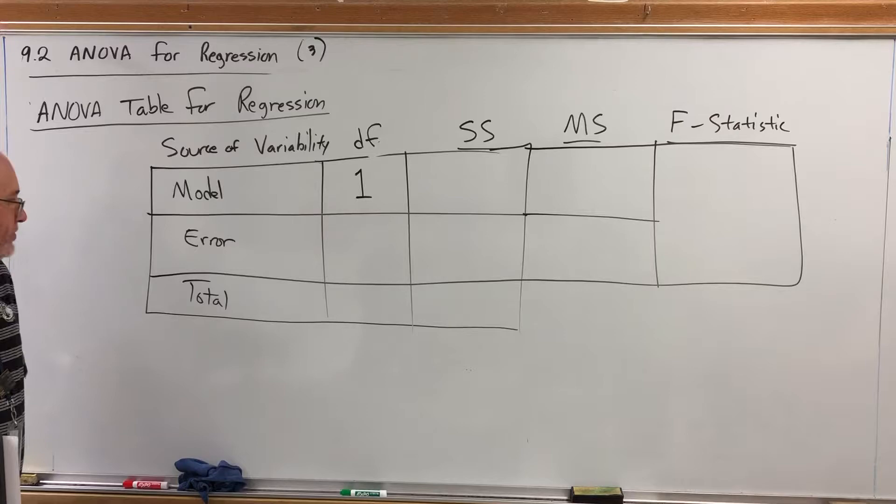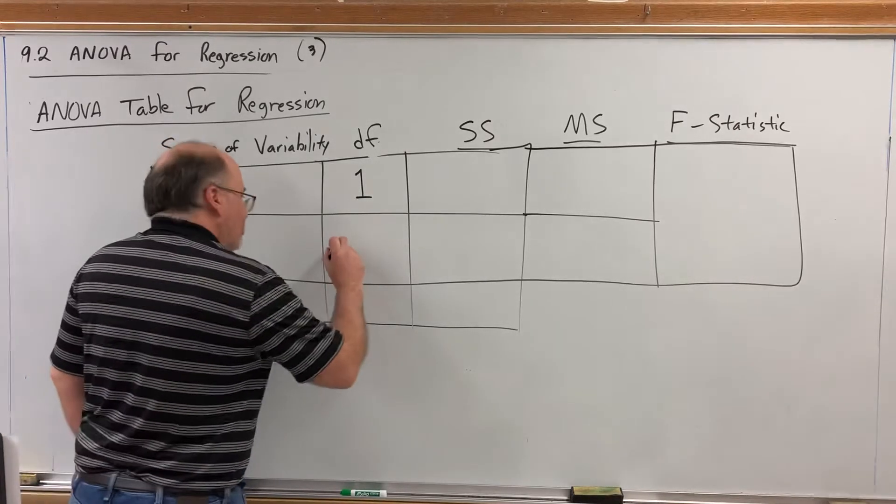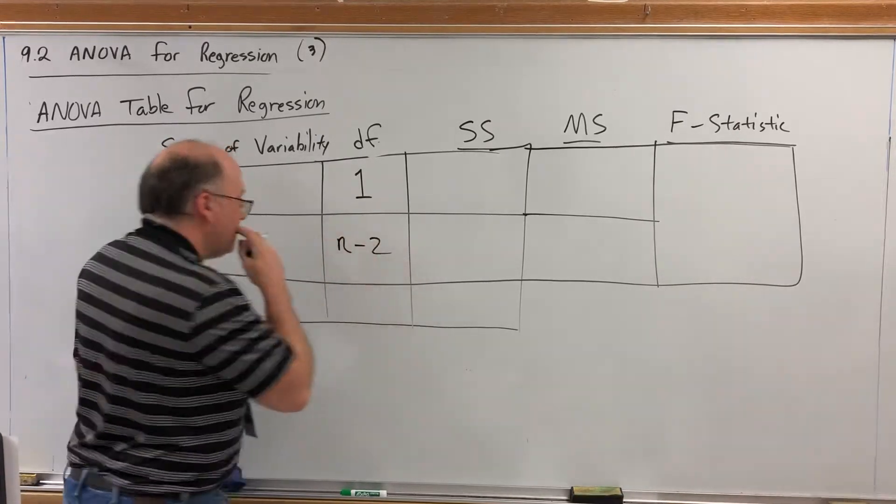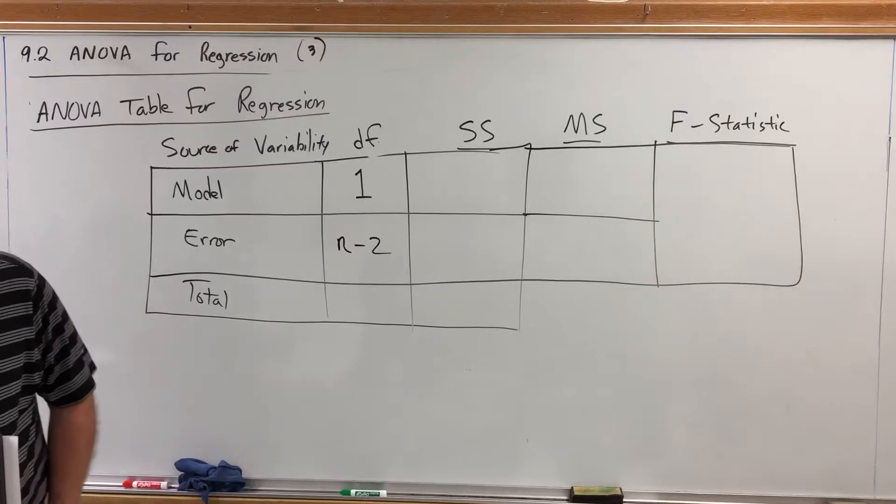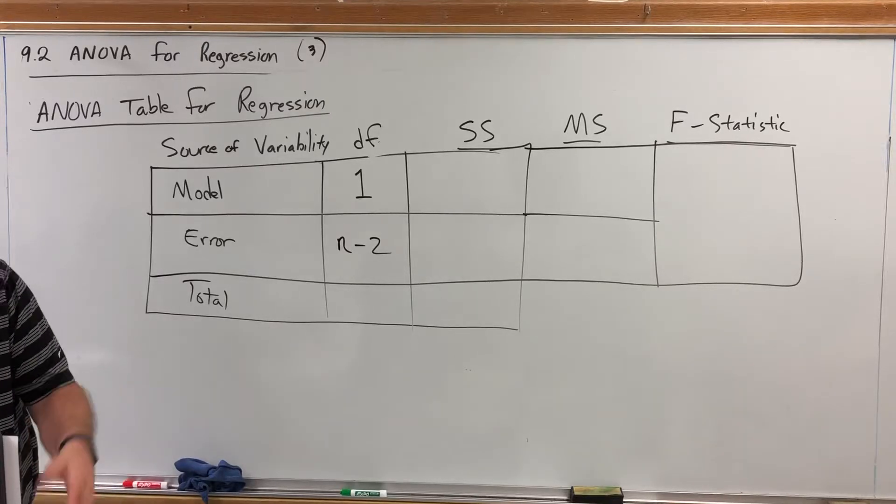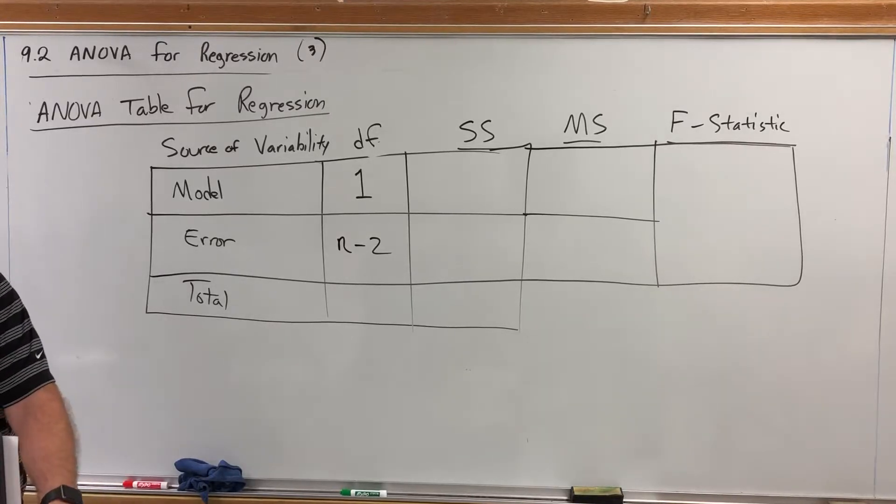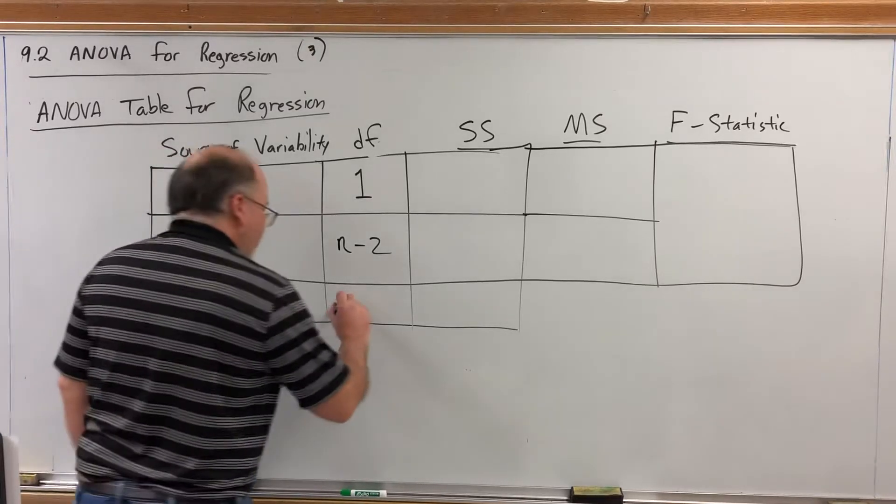The formula for the degrees of freedom in the error is n minus two. Where n is the number of ordered pairs that we use to create the model. And then the total degrees of freedom if we add these is n minus one.